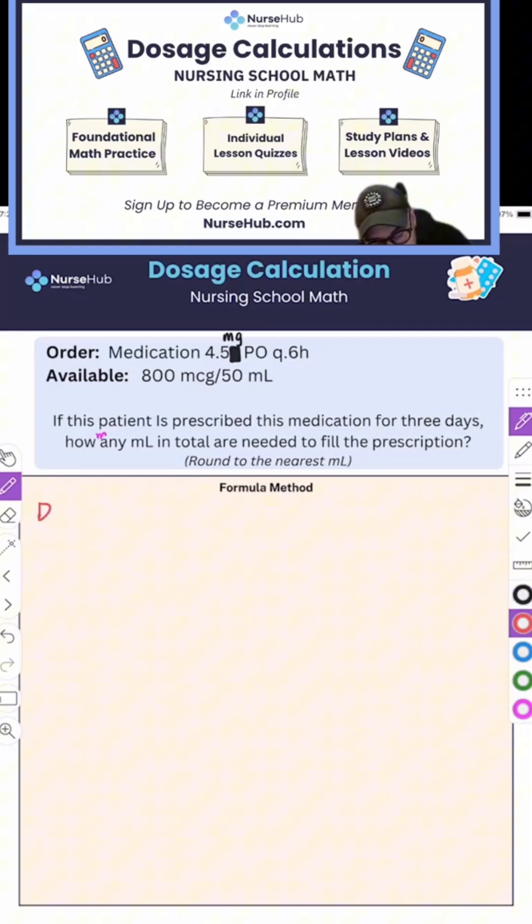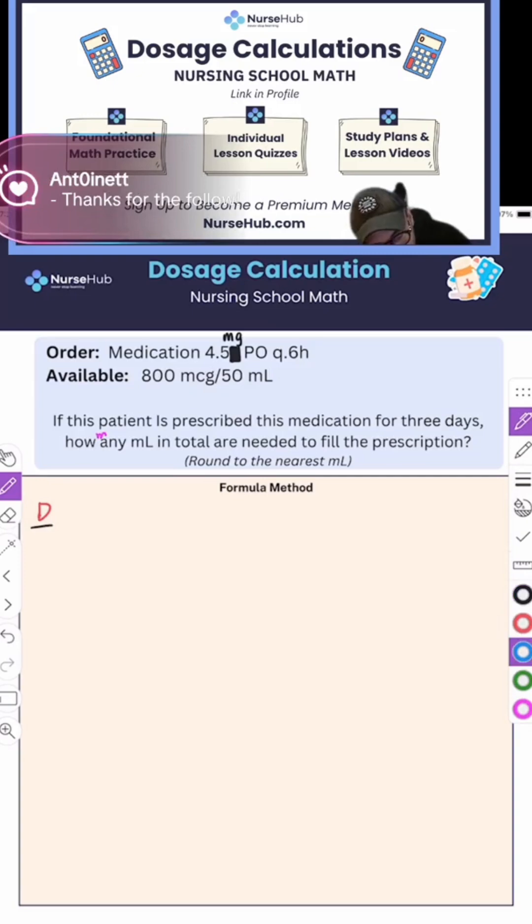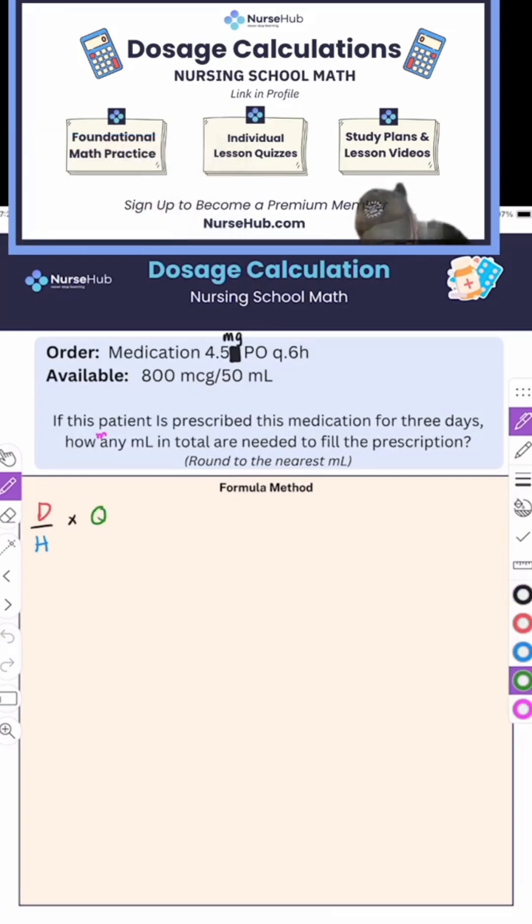So formula method is D over H times - I'm going to put two letters here, Q, and in parentheses, I'm going to put V, and that's going to give us our milliliters.